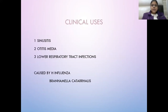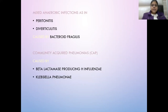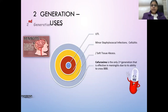Clinical uses of second generation: sinusitis, otitis media, lower respiratory tract infections caused by Haemophilus influenzae, mixed anaerobic infections such as peritonitis and diverticulitis caused by Bacteroides fragilis, community-acquired pneumonia caused by beta-lactamase-producing H. influenzae and Klebsiella pneumoniae, UTI, and soft tissue infections. Cefuroxime is the only second generation cephalosporin effective in meningitis as it crosses the blood-brain barrier.